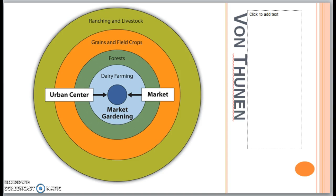Next, you need to know the go-to model for agriculture — the Von Thunen model. There will be at least one question on it, and it has appeared in FRQ questions in the past. Von Thunen was a 19th-century German economist who created this model to explain and predict where and why different agricultural activities would take place around the city marketplace.